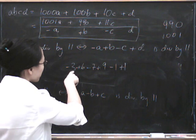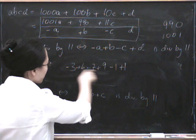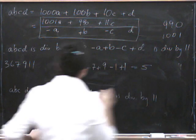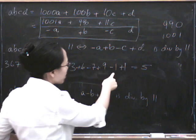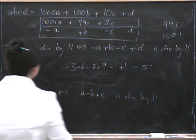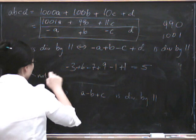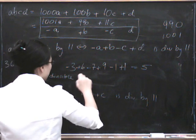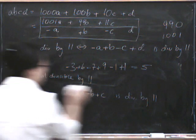So we've got 6 minus 3, that's 3. 5. So that equals 5. Let's try that again. 3 minus 6 plus 7 minus 9 plus 1 minus 1 equals negative 5. So this number is not divisible by 11.